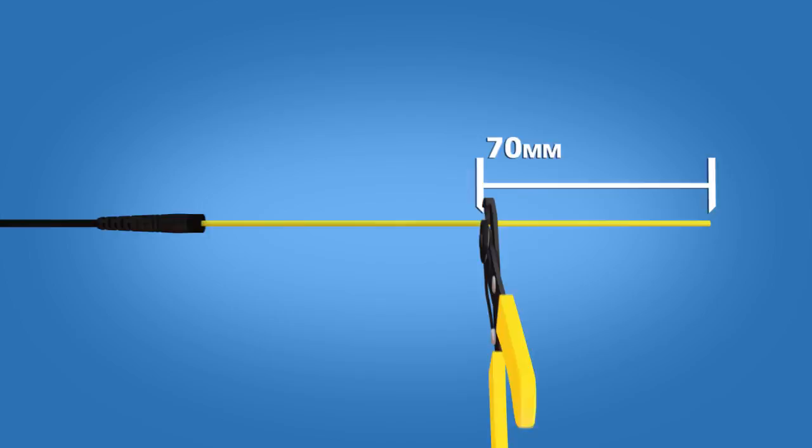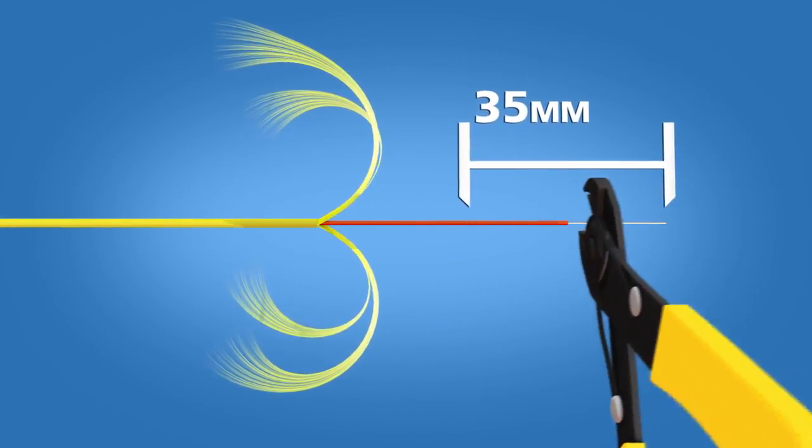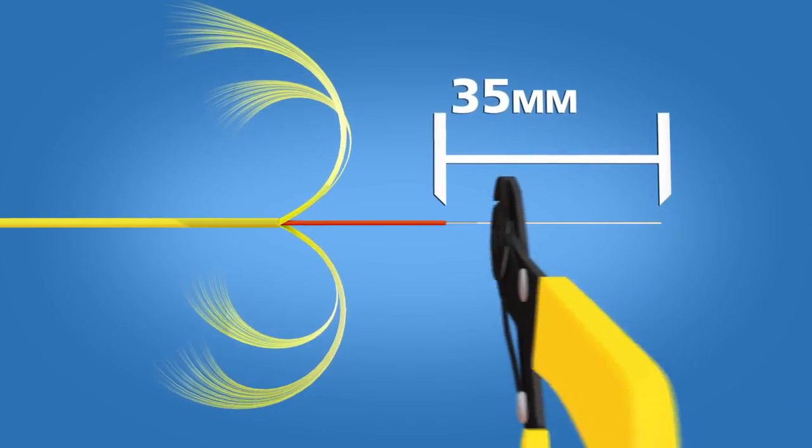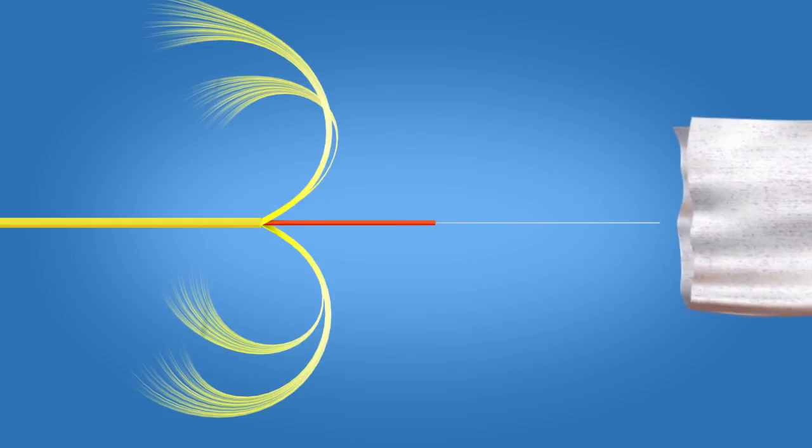Remove 70 mm of cable jacket. Strip 35 mm of 900 micron and 250 micron coating off. Clean the fiber with a lint-free wipe and fiber preparation fluid.